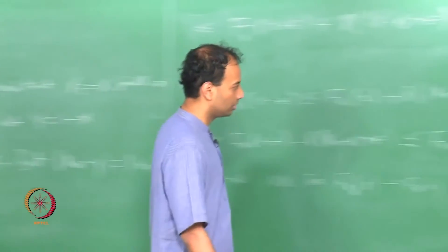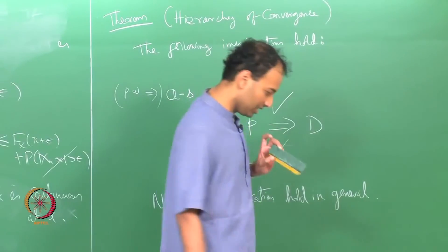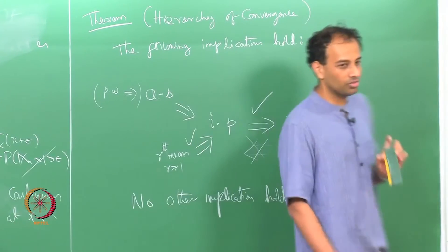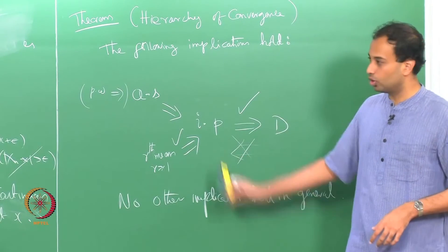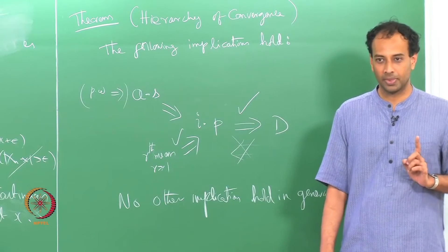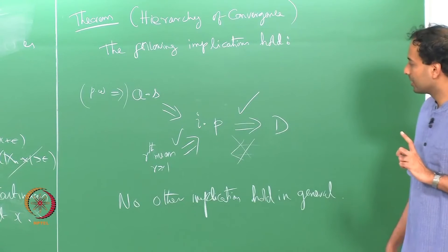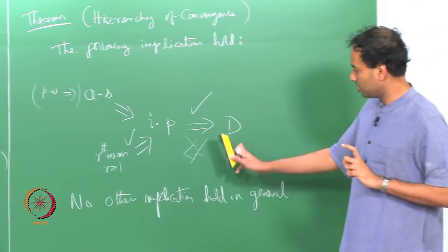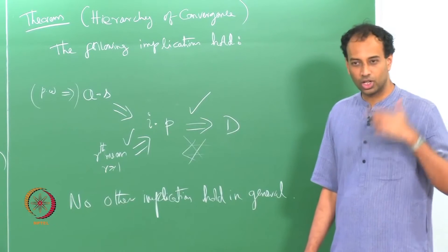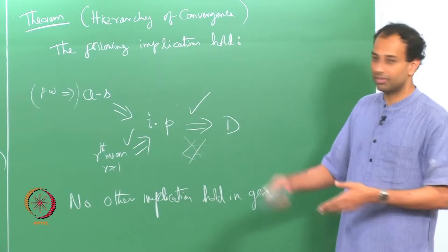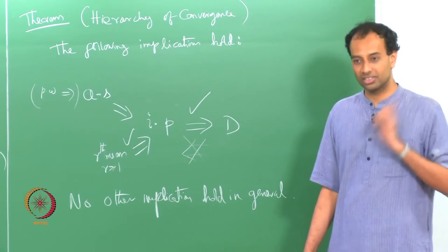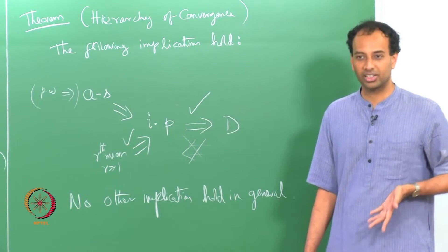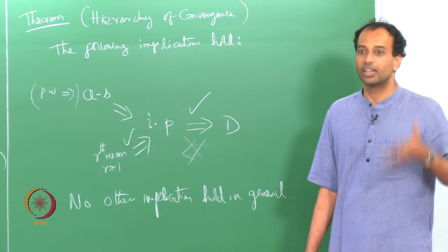So the reverse implication is generally not true. But there is a partial converse: when X_n converges to a constant, the limiting random variable is a constant C, then convergence in distribution and convergence in probability are in fact equivalent notions.